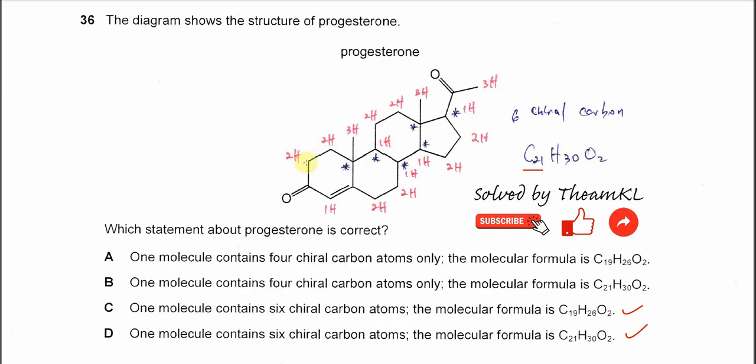And I already put all the hydrogen numbers here. So here there are two hydrogens, two hydrogens, three hydrogens. You just follow this and sum it up, you get 30. Oxygen is quite easy - two only. So therefore, the answer is D. That's all, thank you.